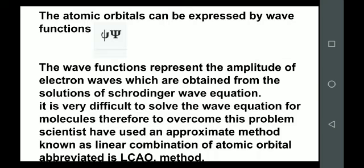This simpler method is known as the Linear Combination of Atomic Orbitals, abbreviated as LCAO. In this method, the wave function of the molecular orbital is expressed as: Ψ = ΨA ± ΨB, where ΨA and ΨB are the wave functions of atoms A and B. For more atoms, additional wave functions such as ΨC are added accordingly.